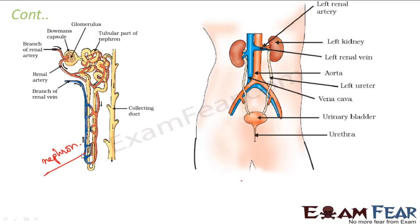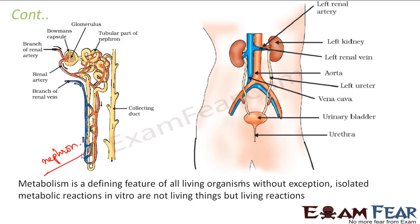So here I have given examples of three processes — digestion, respiration, and excretion — just to show that inside every living organism, there are a set of chemical reactions which happen. Without them, the living organism cannot be alive. These metabolic reactions are a characteristic of living organisms. For a non-living organism — maybe a chair, a table, a bottle, a pen, pencil, paper — for all of them, there are no metabolic reactions. So metabolism is a defining feature of all living organisms without exception.